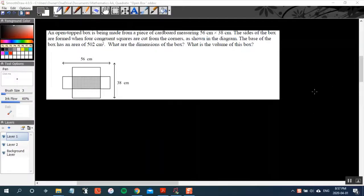Okay, here's the quadratic open box question. An open top box is being made from a piece of cardboard measuring 56 by 38 centimeters. The sides of the box are formed when four congruent squares are cut from the corners as shown in the diagram below. The base of the box has an area of 502 square centimeters. What are the dimensions of the box and what is the volume of this box?